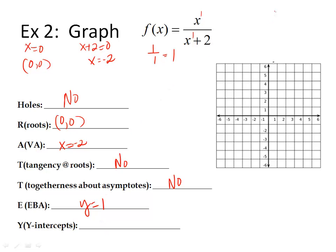And then, y-intercepts. Lastly, put zero in for x. Zero over two, which is just zero. So my y-intercept is (0, 0) as well.